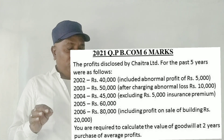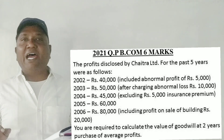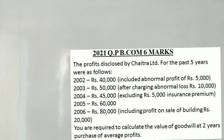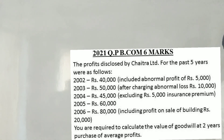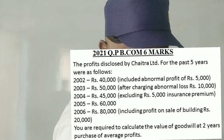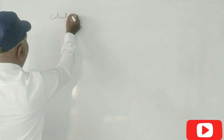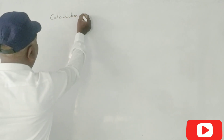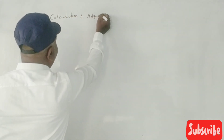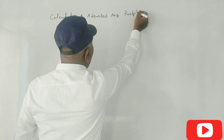You are required to calculate the value of goodwill after two years purchase of average profits. Now, let's solve the problem. Here is a calculation of adjusted average profit.